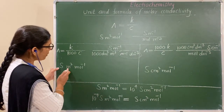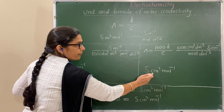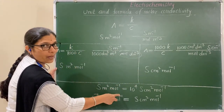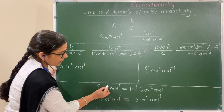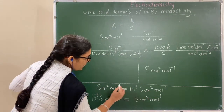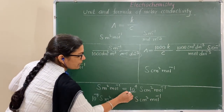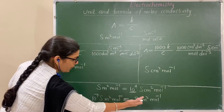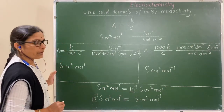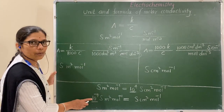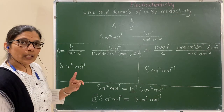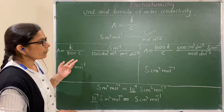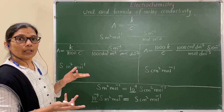You may determine molar conductivity in either unit — siemen meter square per mole or siemen centimeter square per mole. You can convert from one to the other using a conversion factor. Siemen meter square per mole is converted to siemen centimeter square per mole using the meter square to centimeter square conversion factor. Once you understand this concept, you can solve any MCQ or numerical in the theory exam. You may also convert siemen per meter to siemen per centimeter for conductivity.